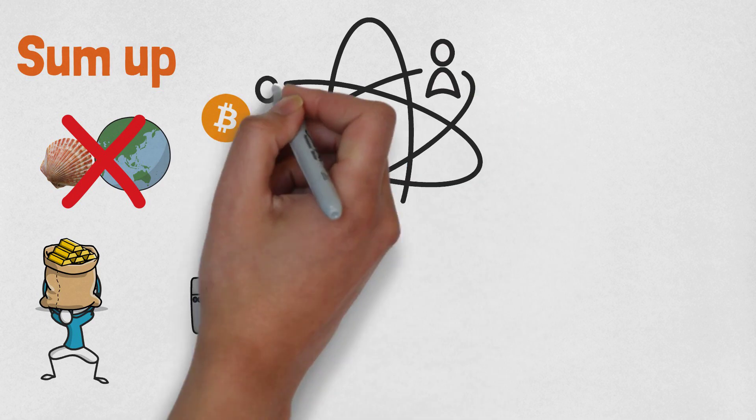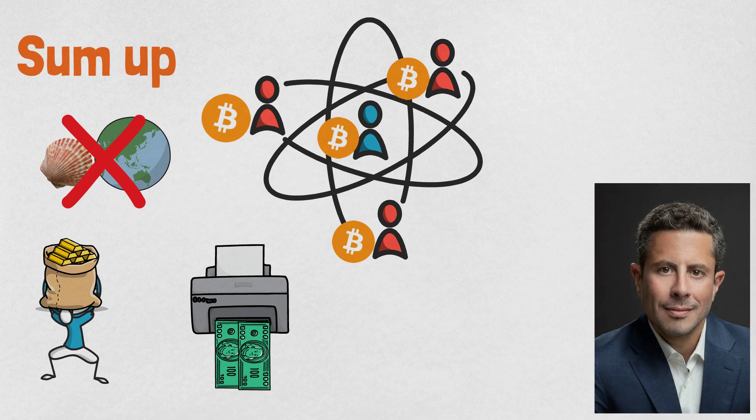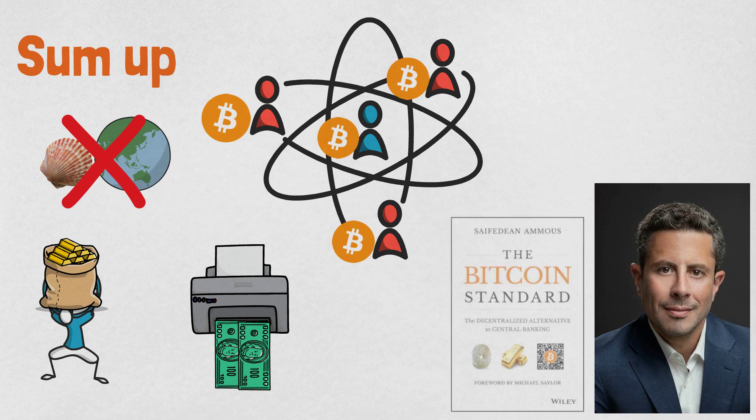However, Bitcoin needs to be globally adopted to fix our money problem. The author of this book, Saifedean Ammous, is a respected economist and a holder of PhD in Sustainable Development. He managed to change the perspective on Bitcoin of many people who read his book and I would highly recommend that you read the whole book.